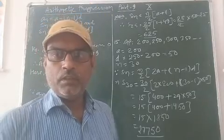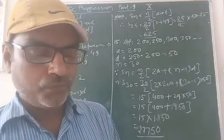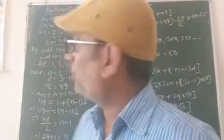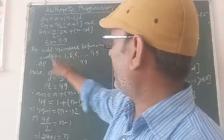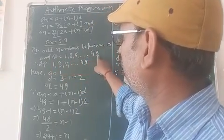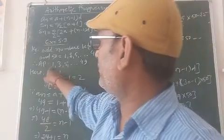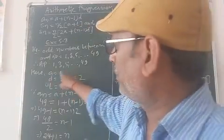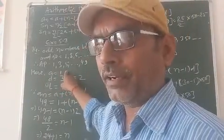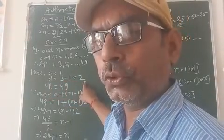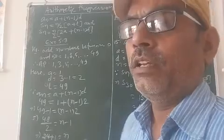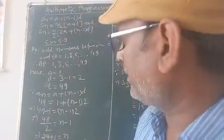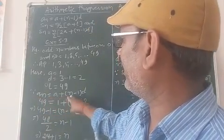Question number 14. Find the sum of odd numbers between 0 and 50. Odd numbers between 0 and 50 are 1, 3, 5, and the last is 49. So the AP is 1, 3, 5, up to 49. a equals 1, d equals 3 minus 1 equals 2, and the last term is 49. Now we need to find n. Using the formula An equals a plus n minus 1 into d.